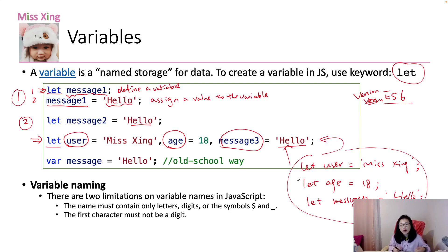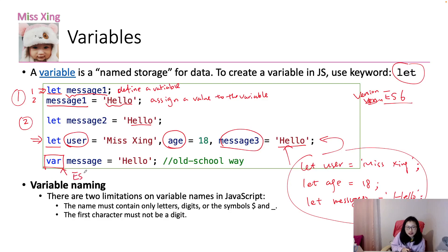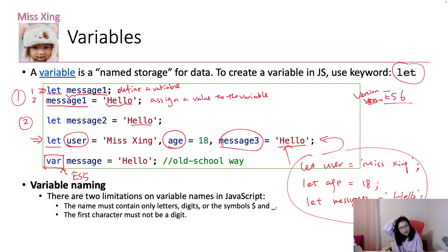There's another way to define a variable, which is using 'var'. This is also a keyword, but it's the old school way. 'var' was used before ES6 — like ES5. Before ES6, which means before 'let' came out, the only way to define a variable inside JavaScript was using 'var'. And using 'var' does have some problems. When we go deeper into JavaScript, especially after covering execution context, we'll show you the difference between 'let' and 'const'. So for now, when you need to define a variable, use 'let'.